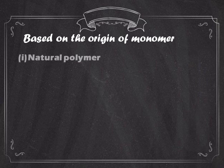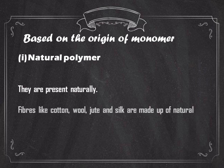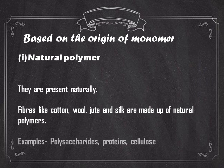Natural polymer: As the name suggests, natural polymers are present naturally. Fibers like cotton, wool, jute, and silk are made up of natural polymers. Examples include polysaccharides, proteins, cellulose, etc.